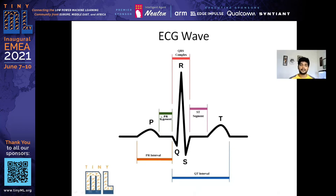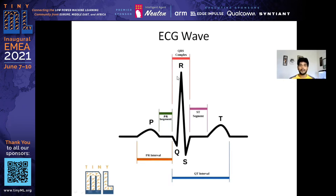If you combine these as intervals, the PR interval is between the P wave and the start of the Q wave. The RR interval is the distance between two consecutive R waves — the waves keep repeating, and the gap between one R and the next R is called the RR interval.